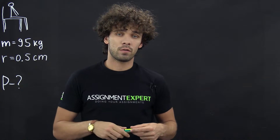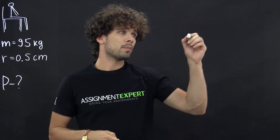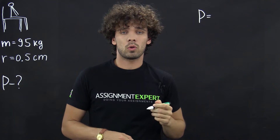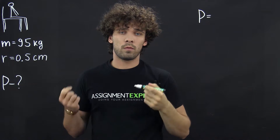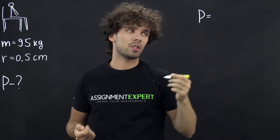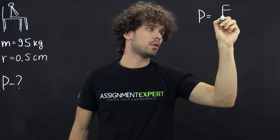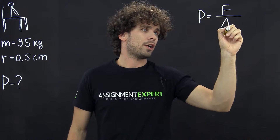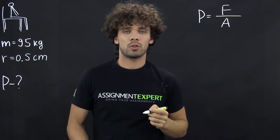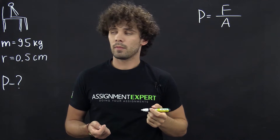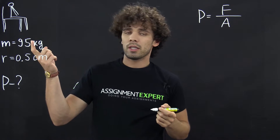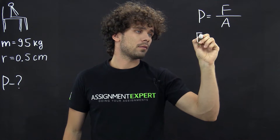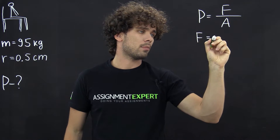From the definition of pressure, P is equal to the force applied to the surface, F, over the area of the surface to which this force is applied. In our case, this is the force of gravity, so F equals mg.